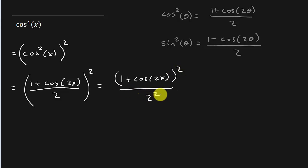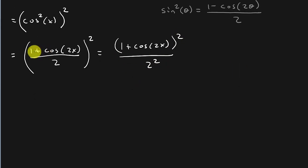So now we have 1 plus cosine 2x squared over 2 squared, all right? So all I did is I just squared the numerator, squared the denominator. And so this is equal to 1 plus 2 cosine 2x plus cosine squared 2x. And that's all over 4.